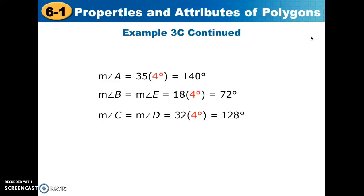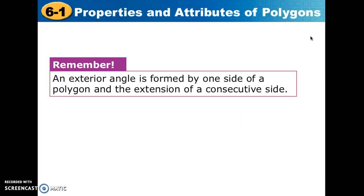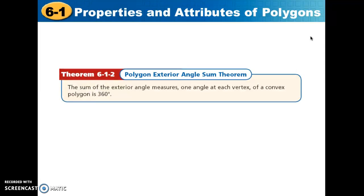Let's move on to exterior angles. Here we have polygons drawn with exterior angles shown — you form an exterior angle by extending a side of the polygon. A new theorem states that the sum of the exterior angles of any polygon equals 360 degrees. Whether it's a triangle, pentagon, or any other size polygon, the exterior angles always add up to 360 degrees.